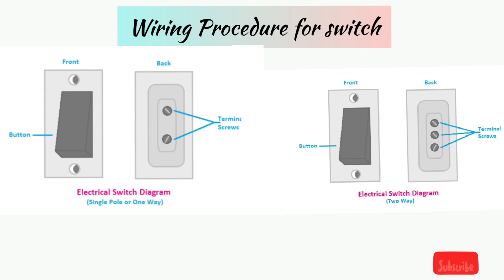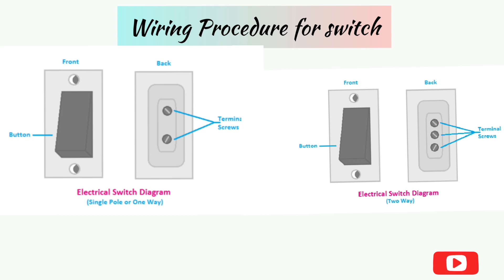Next, we learn about the two-way switch. Here you can see the terminal diagram of the two-way switch, or SPDT — single-pole double-throw — switch. It has three terminals for its connection. It has no off function. It takes one input and provides two outputs. When the switch position is changed, the output supply also changes.